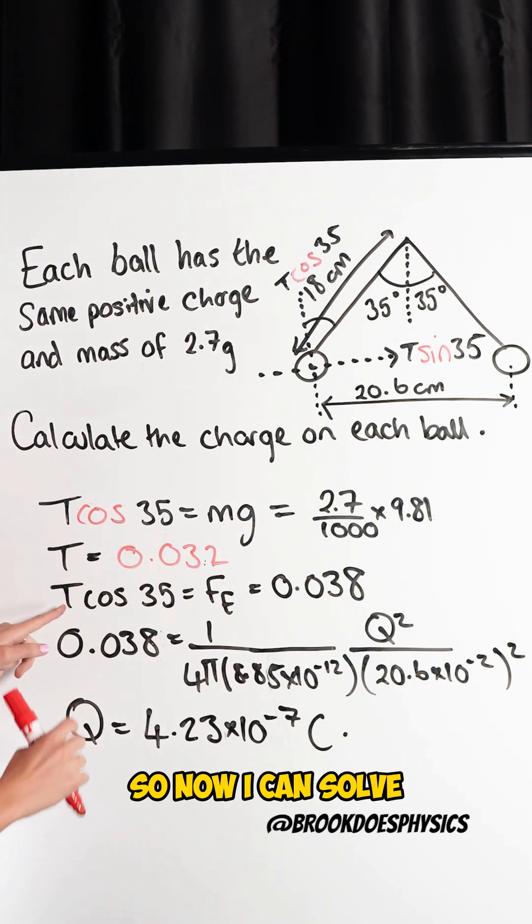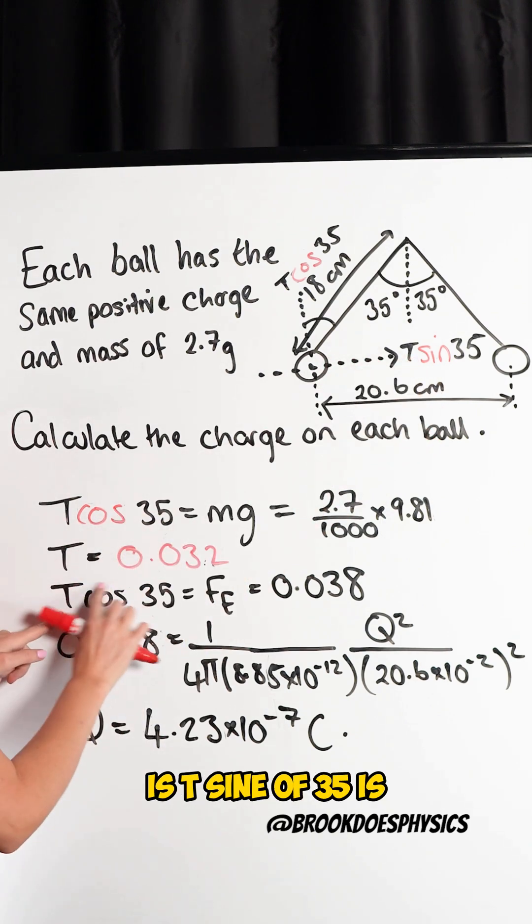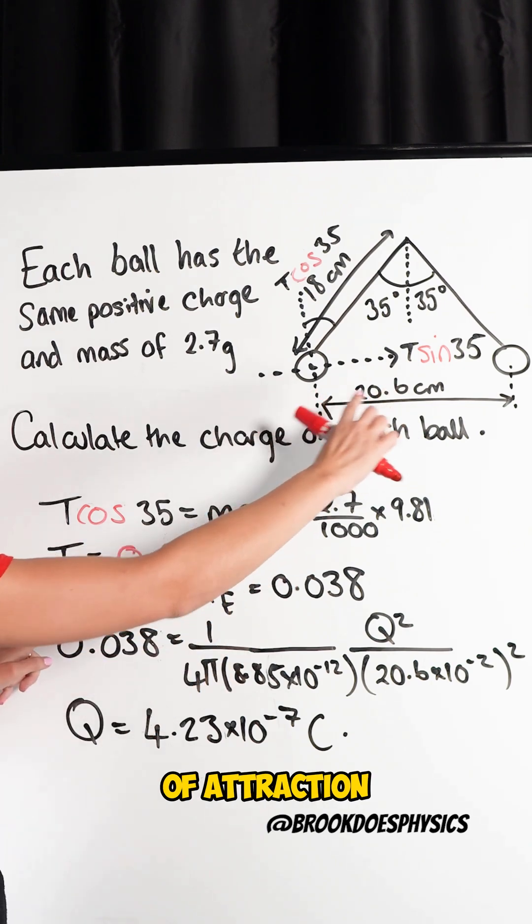So now I can solve here again. T cosine 35 is wrong. It's T sine of 35 is going to equal that electrostatic force of attraction between them.